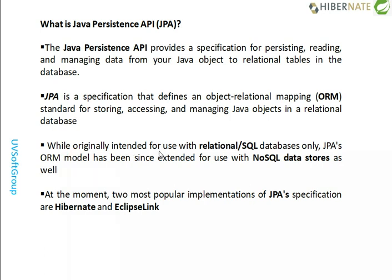Originally JPA was for relational and SQL databases only, and later it was implemented for NoSQL databases as well — like MongoDB, Cassandra, GameFire, and edX-type databases. Nowadays JPA works with any backend server, whether SQL-based or non-SQL-based. The two popular implementations of JPA are Hibernate, the most popular, and EclipseLink.